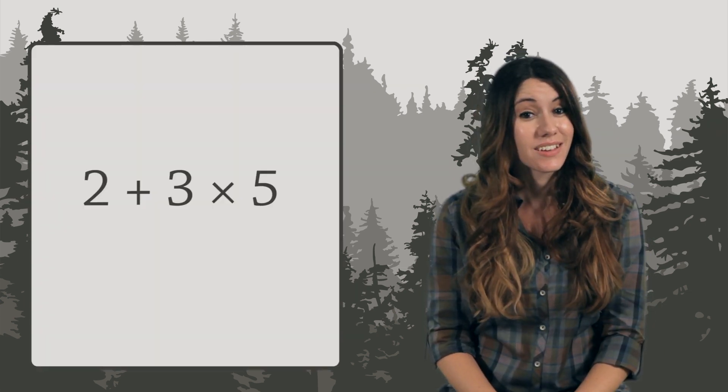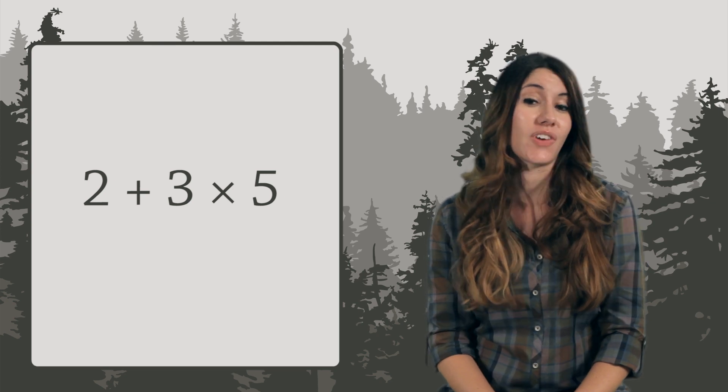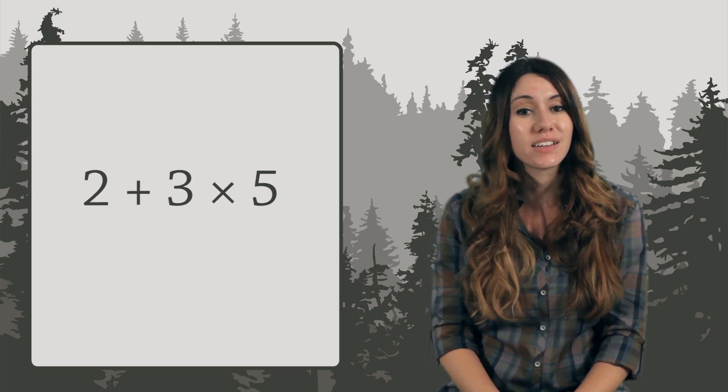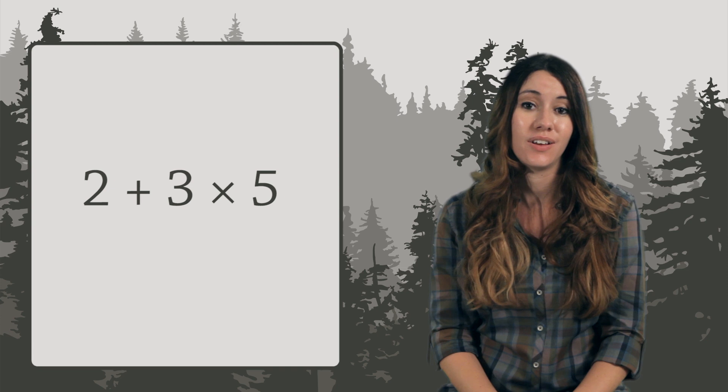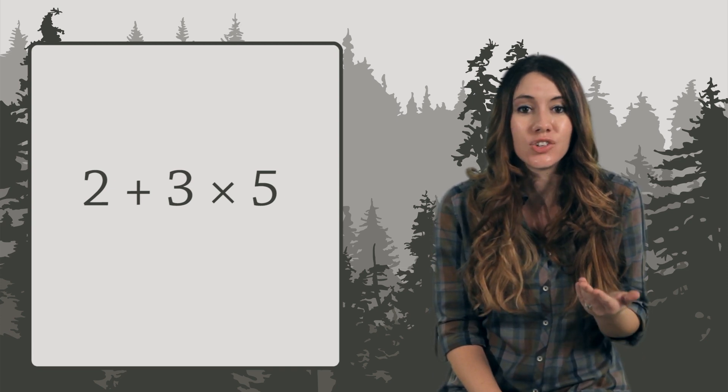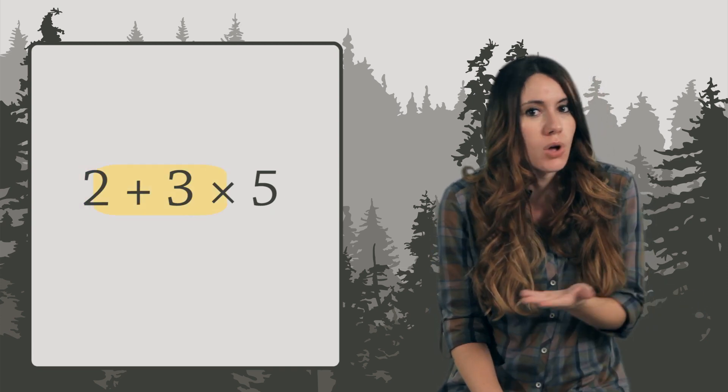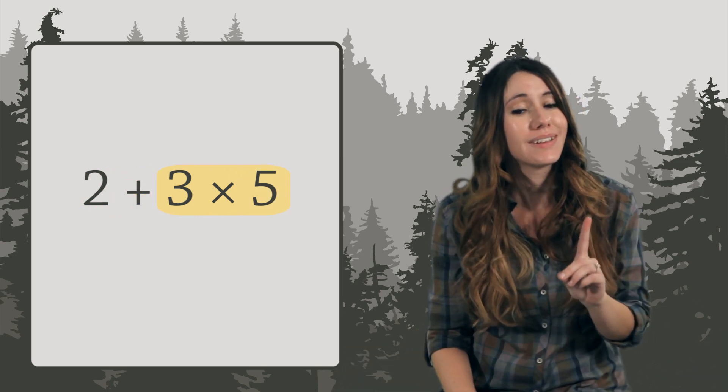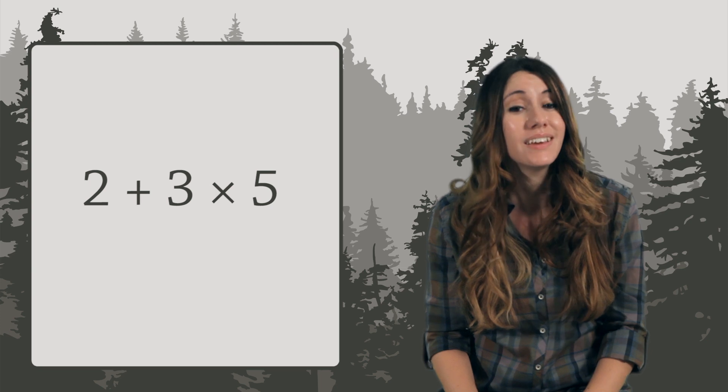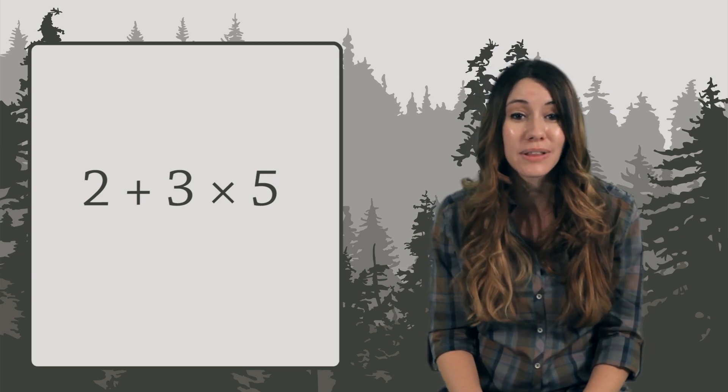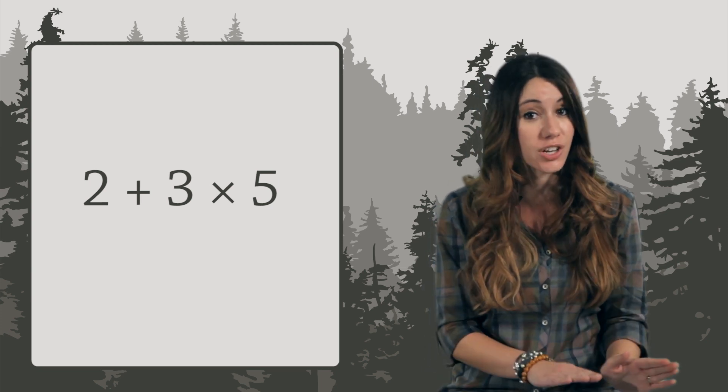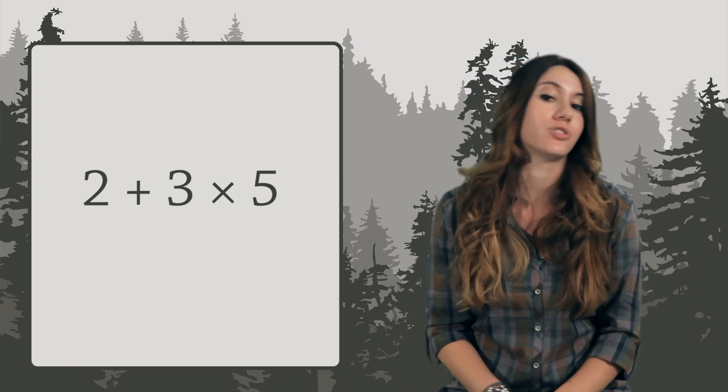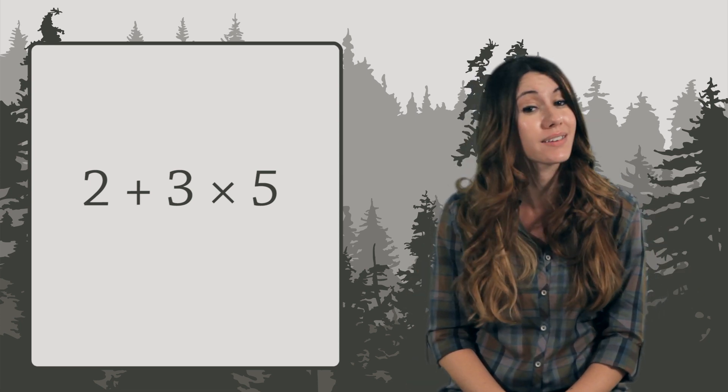But take a look at this: 2 plus 3 times 5. Here we have an addition AND multiplication. What do we do first? Do we first add 2 plus 3? Do we first multiply 3 times 5? Does it even matter? Oh, it most definitely matters. The associative property only applies if all the operations are addition, or all the operations are multiplication. It doesn't apply if you have a mix.